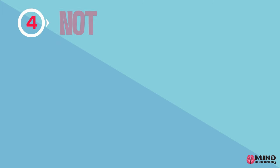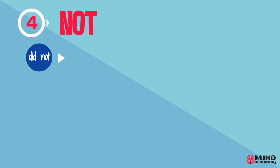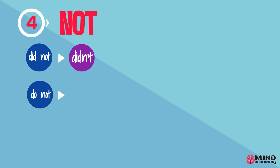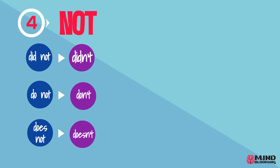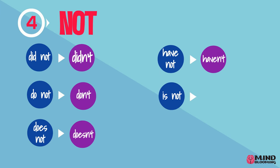For the word not, I drop the O and add an apostrophe. So did not will be didn't. Do not will be don't. Does not will be doesn't. Have not, haven't. Is not, isn't. Are not, aren't.